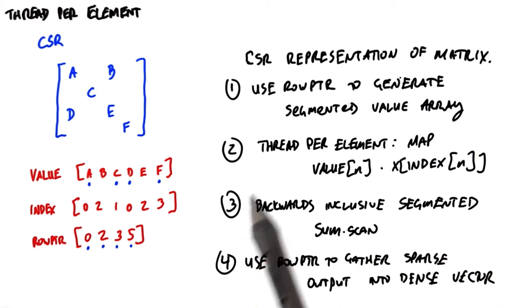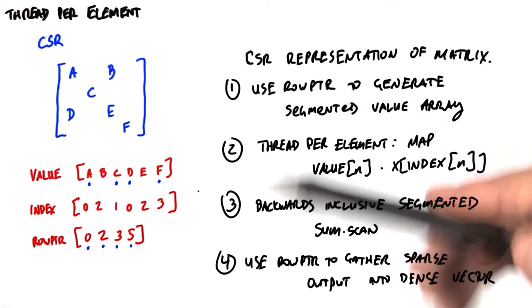Then we're going to perform our backwards inclusive segmented sum scan, which will sum up all the partial products in the matrix row.